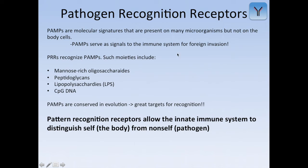Pathogen-associated molecular patterns, or PAMPs, are the molecular signatures that are present on many microorganisms but not on body cells — a way to tell the difference between self and pathogens. PAMPs serve as signals to the immune system for foreign invasion. The PRRs recognize the PAMPs, and the most common PAMPs include mannose-rich oligosaccharides, peptidoglycans, lipopolysaccharides, and CpG DNA.